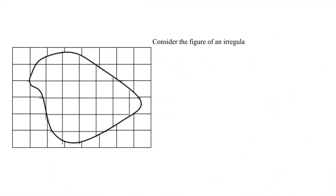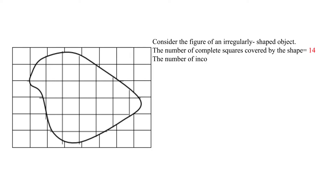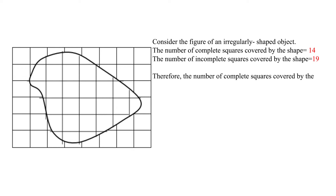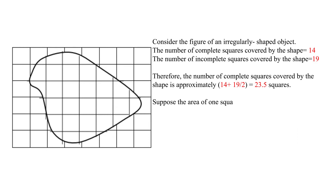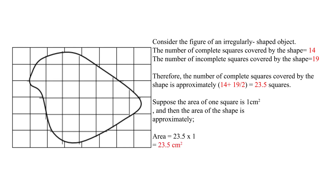Consider the figure of an irregularly shaped object. The number of complete squares covered by the shape equals 14, and the number of incomplete squares covered by the shape equals 19. Therefore, the total number of effective squares is approximately 14 plus 19 divided by 2, equals 23.5 squares. Suppose the area of 1 square is 1 square centimeter; then the area of the shape is approximately 23.5 times 1, equals 23.5 centimeters squared.